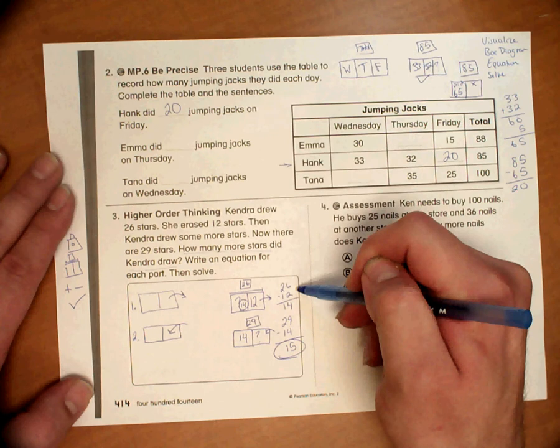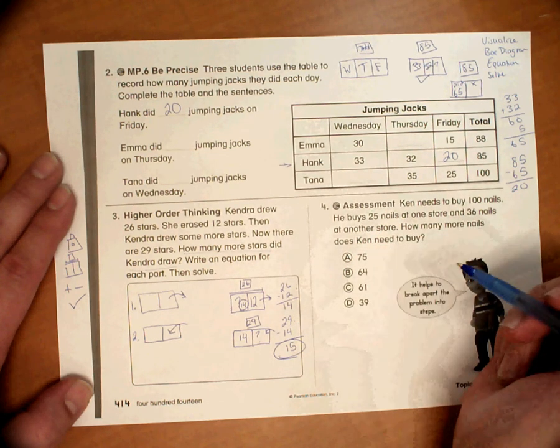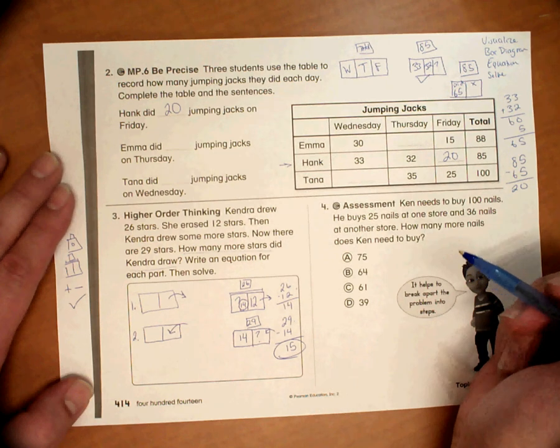We have our two equations. 26 minus 12 equals 14. And then 29 minus 14 equals 15. So this is how we solve that problem.